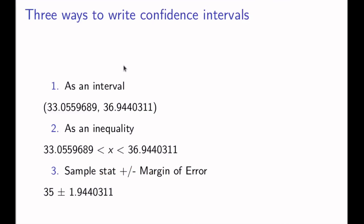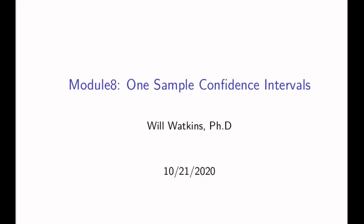There are three ways confidence intervals are written. As interval notation, it's written as (x-bar minus margin of error, x-bar plus margin of error). As an inequality, the lower bound and upper bound bracket the parameter. The third way is to state the sample statistic plus or minus the margin of error — for example, 35 plus or minus the margin of error. That's a quick run-through of module 8, one-sample confidence intervals. We'll talk more about how to write these up in your written reports during the next week.